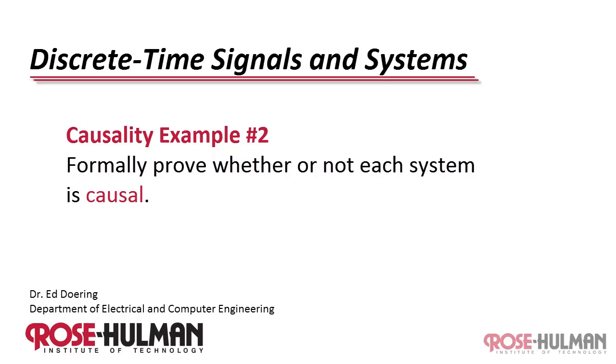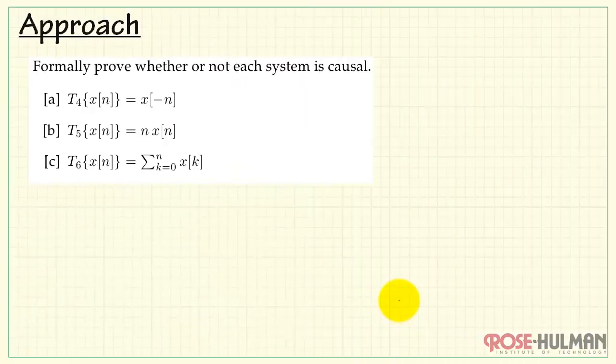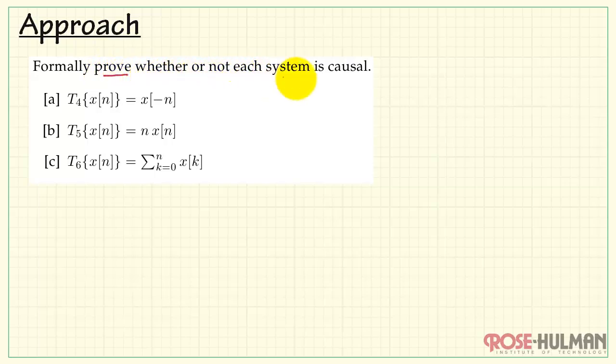This is causality example number two. Formally prove whether or not each system is causal. Now in this problem, we want to prove whether or not each system is causal.